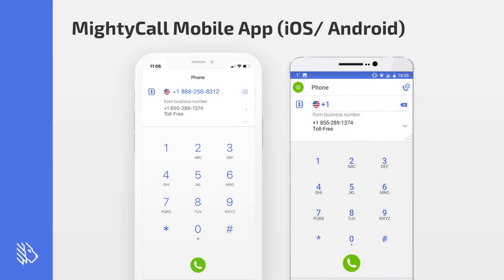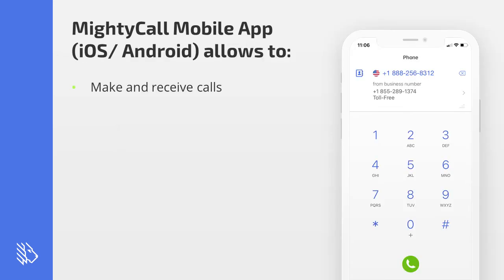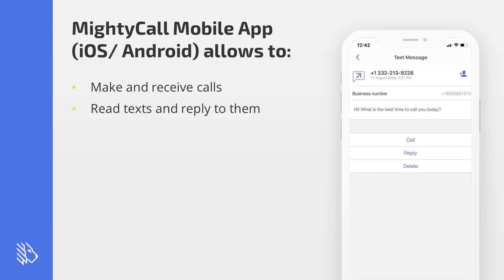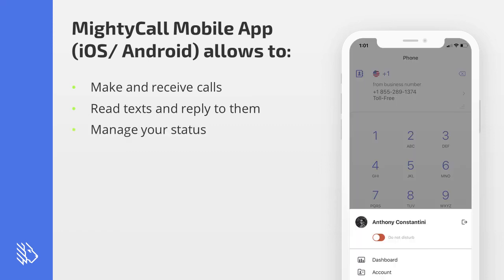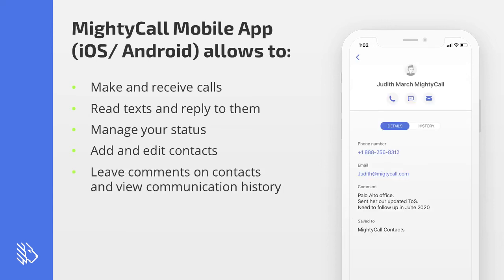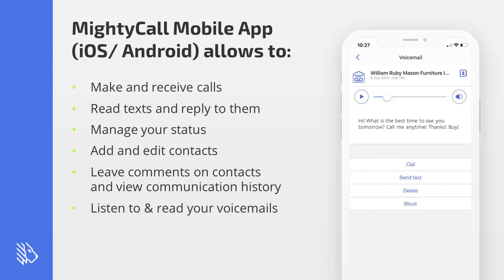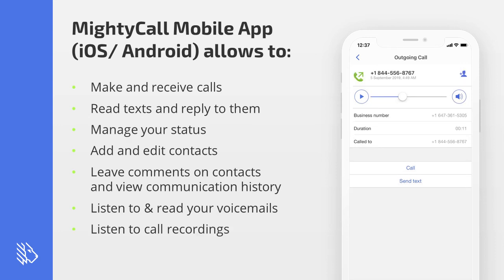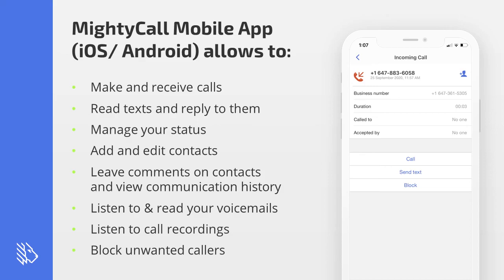About the mobile app — MightyCall's mobile app is supported for iOS and Android, and it's extremely flexible. You can make and receive calls through your business number directly on your cell phone, read and reply to texts from your business number, manage your status (available or do not disturb), add and edit contacts in the business contact book, leave comments on contacts, view communication history with each contact, listen to and read your voicemails, listen to call recordings, and block unwanted callers.